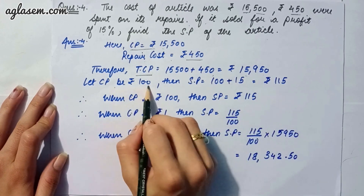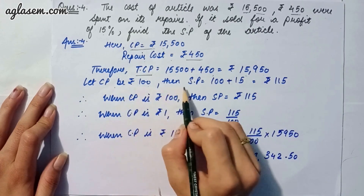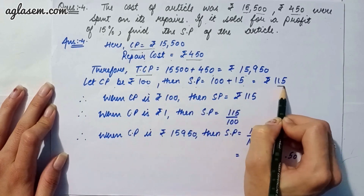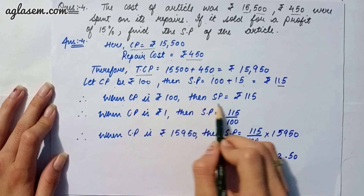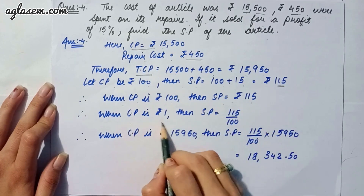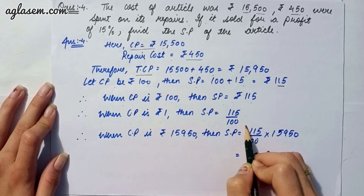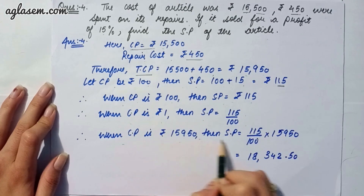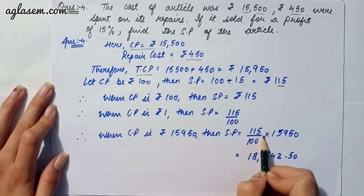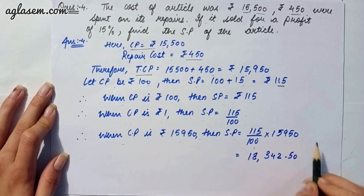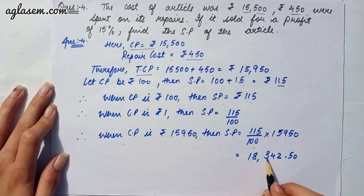We let the CP be 100, then selling price will be 100 plus 15, that is 115. If cost price is 100, selling price is 115. If cost price is 1, selling price is 115 divided by 100. If cost price is 15950, the selling price will be rupees 18342.50.